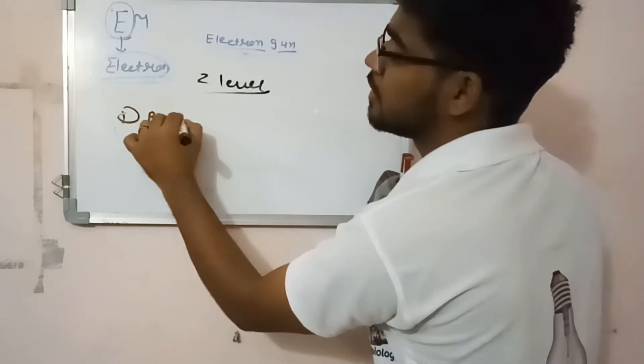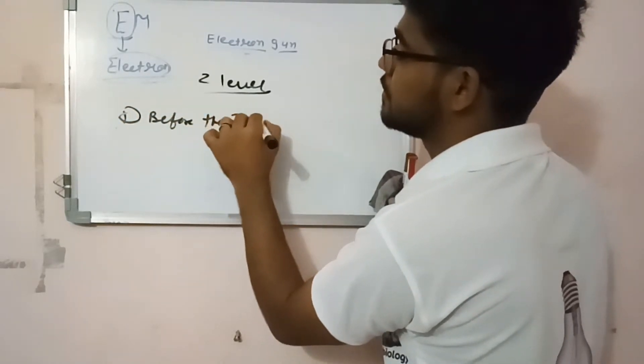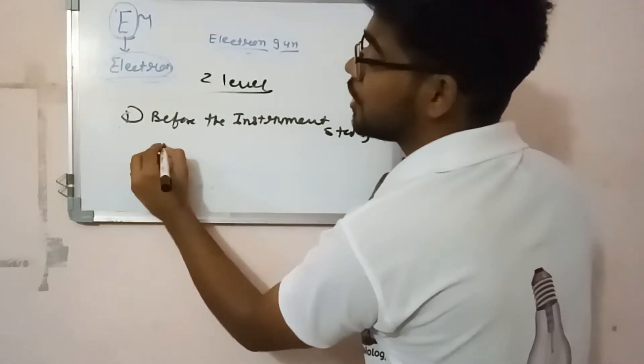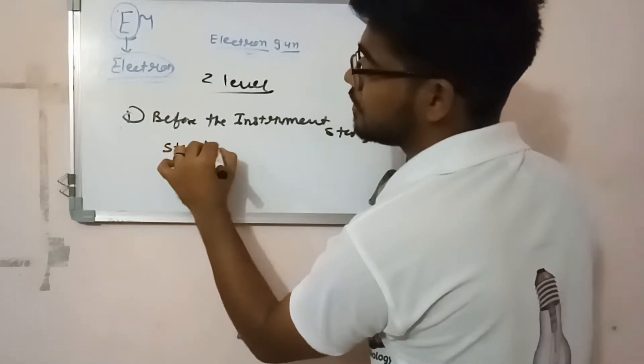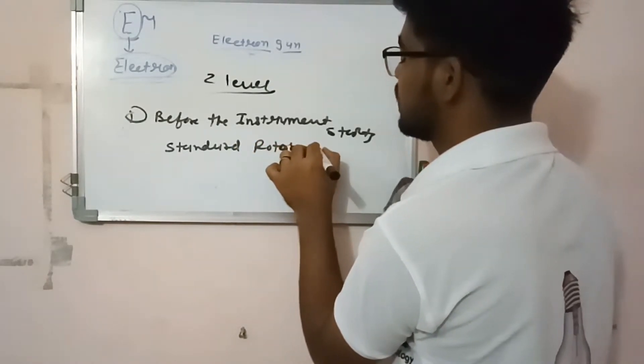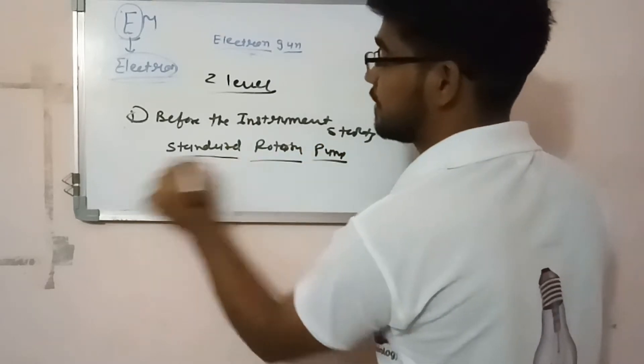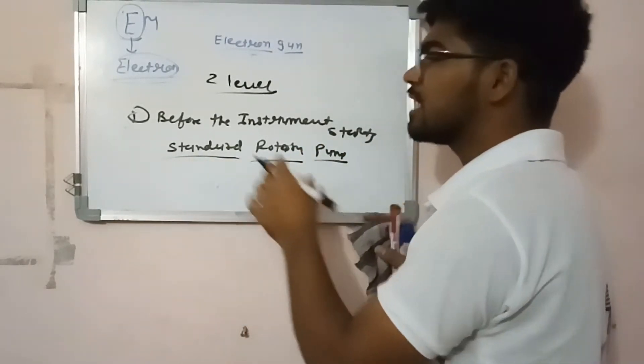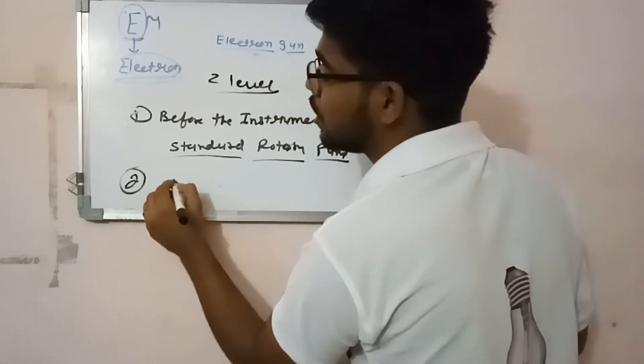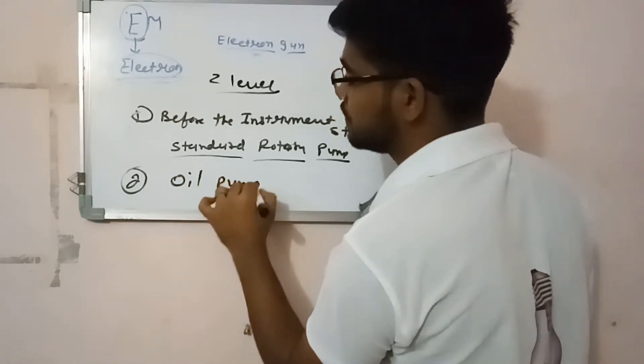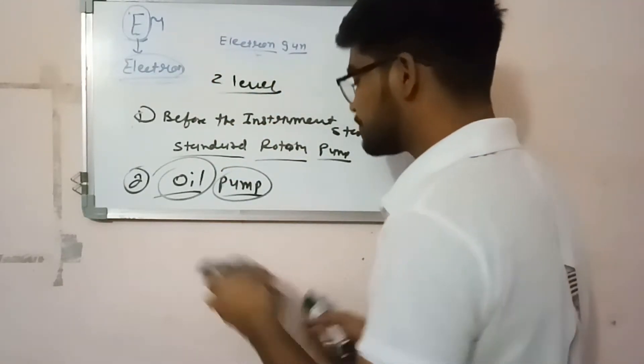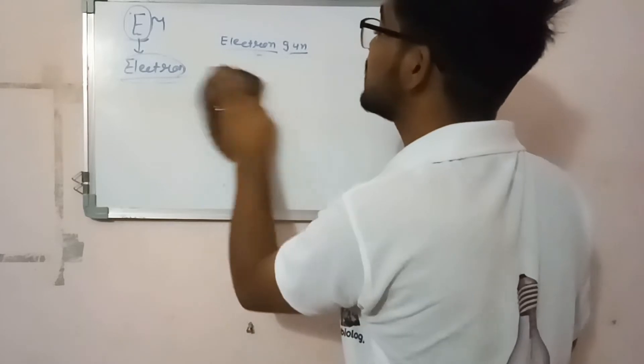Before the instrument starts, a standard rotary pump is there. The rotary pump reduces the molecules inside the instruments. At the second level, the oil pump is there. This creates vacuum near the electron gun. This is the basic instrumentation or differentiation between electron microscopy and light microscopy by instrumentation.